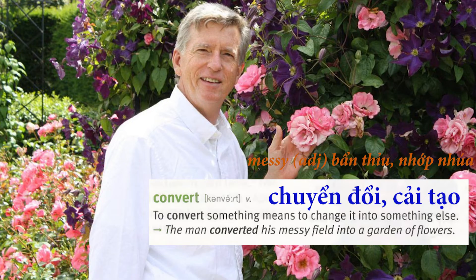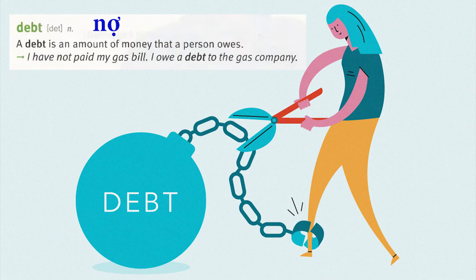Convert: To convert something means to change it into something else. The man converted his messy field into a garden of flowers. Debt: A debt is an amount of money that a person owes. I have not paid my gas bill. I owe a debt to the gas company.